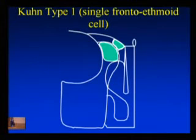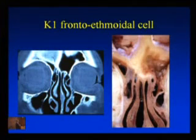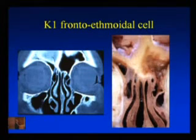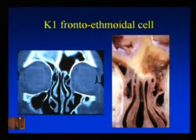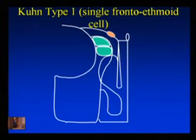For the Kuhn type 1 cell — a single cell in association with the agonese cell — you can see the agonese cell sitting here, and then the small Kuhn type 1 cell sitting adjacent to it. The frontal sinus drainage pathway is posterior to the agonese cell and that Kuhn type 1 cell. A single frontal ethmoidal cell more commonly sits above the agonese cell, with the frontal sinus drainage pathway medial and posterior — that's the common configuration.